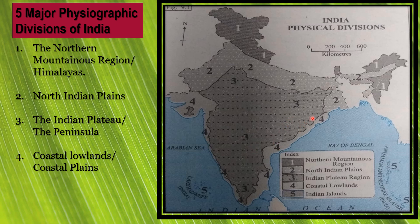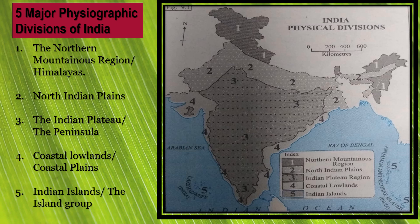The plain along the eastern coast, called the eastern plain, lies between the Eastern Ghats and the Bay of Bengal. The western plains lie between the Western Ghats and the Arabian Sea. India has two main groups of islands: the Andaman and Nicobar Islands in the Bay of Bengal, and the Lakshadweep Islands in the Arabian Sea.